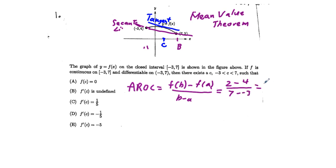We have negative 2 over 7 minus negative 3 is 10, which simplifies to negative 1 fifth. So that is going to be our answer D.